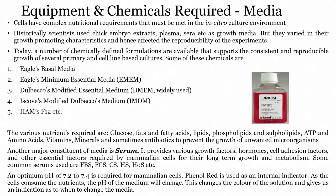Today, a number of chemically defined formulations are available that support consistent and reproducible growth of several primary and secondary cell lines. Some of these are Eagle Basal Media, Eagle Minimum Essential Media (EMEM), Dulbecco's Modified Essential Media (DMEM) — which is extremely widely used and is the one you will generally find in the laboratory — Iscove's Modified Dulbecco's Medium (IMDM), and HAMS F12 media. Among these, DMEM is the most widely used.